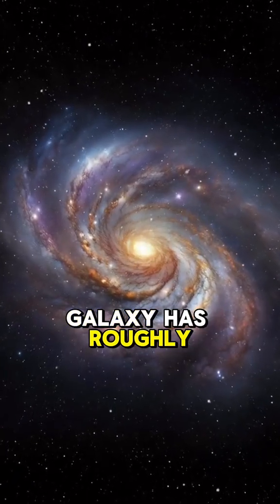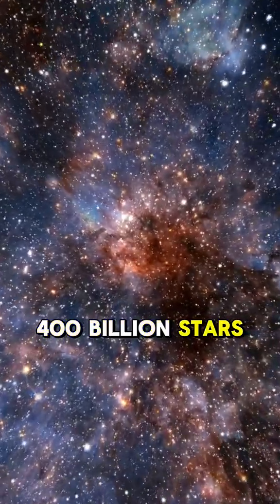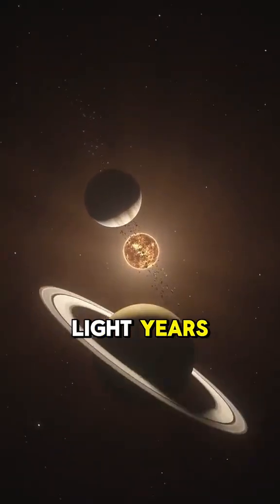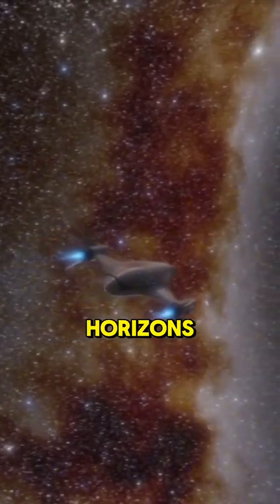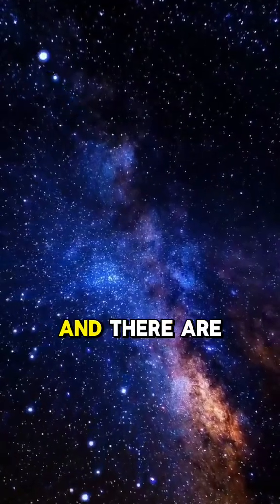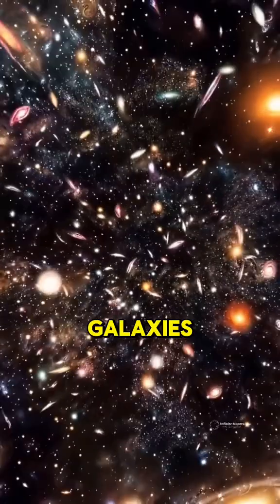Our Milky Way galaxy has roughly 400 billion stars and the average distance between stars is about 4 light years. If you could fly at the speed of New Horizons, crossing that distance would take over 70,000 years and there are at least 2 trillion galaxies.